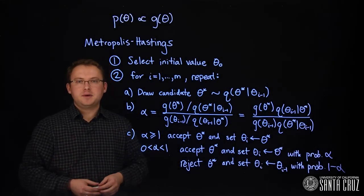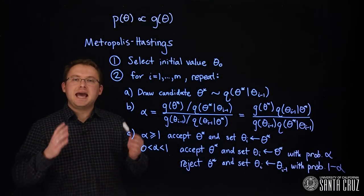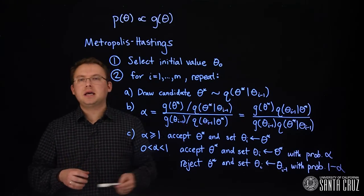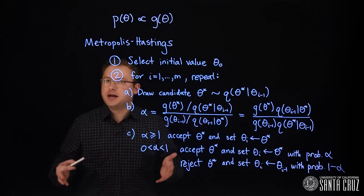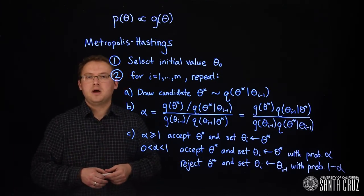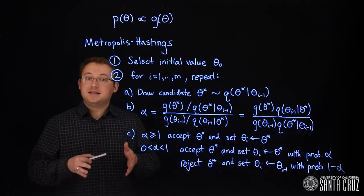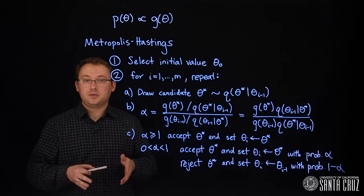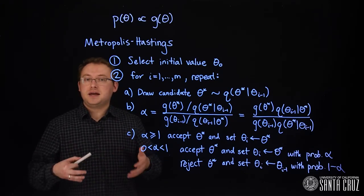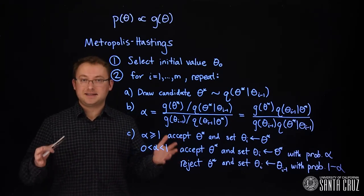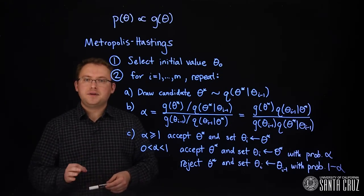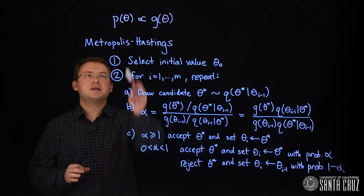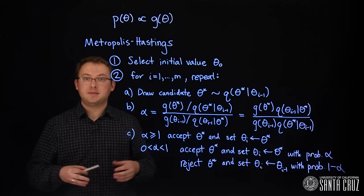One careful choice we must make is with the candidate generating distribution q. It may or may not depend on the previous iteration's value of theta. One example where it doesn't depend on the previous value would be if q of theta star is always the same distribution. If we take this option, q of theta should be similar to p of theta to approximate it.